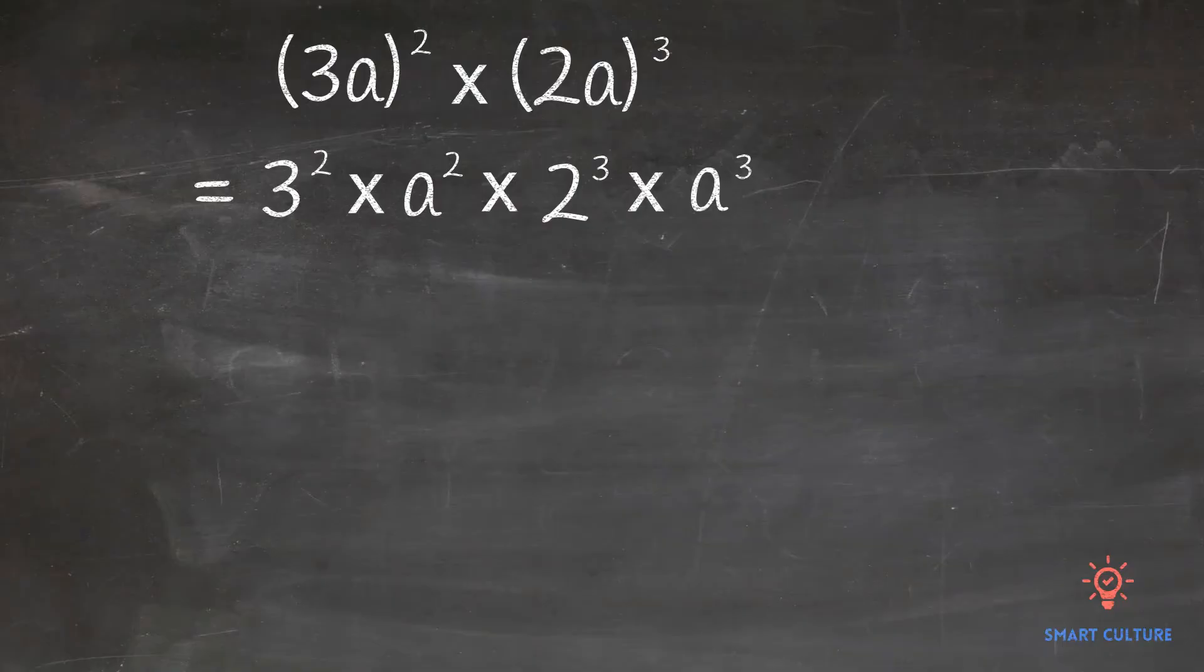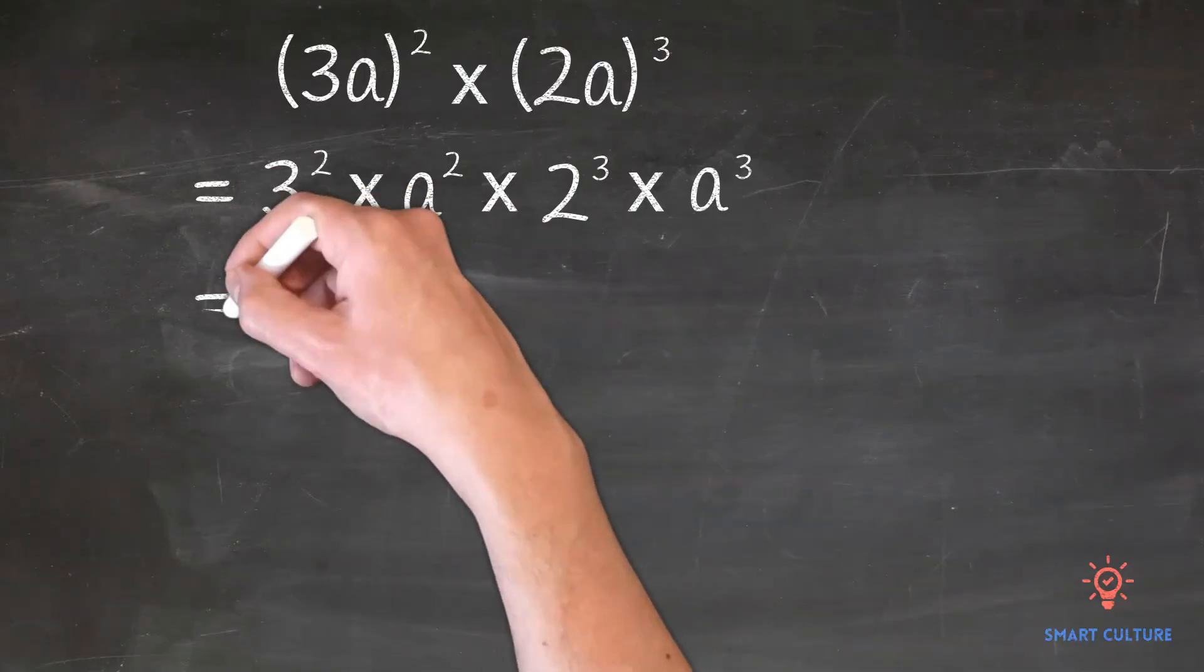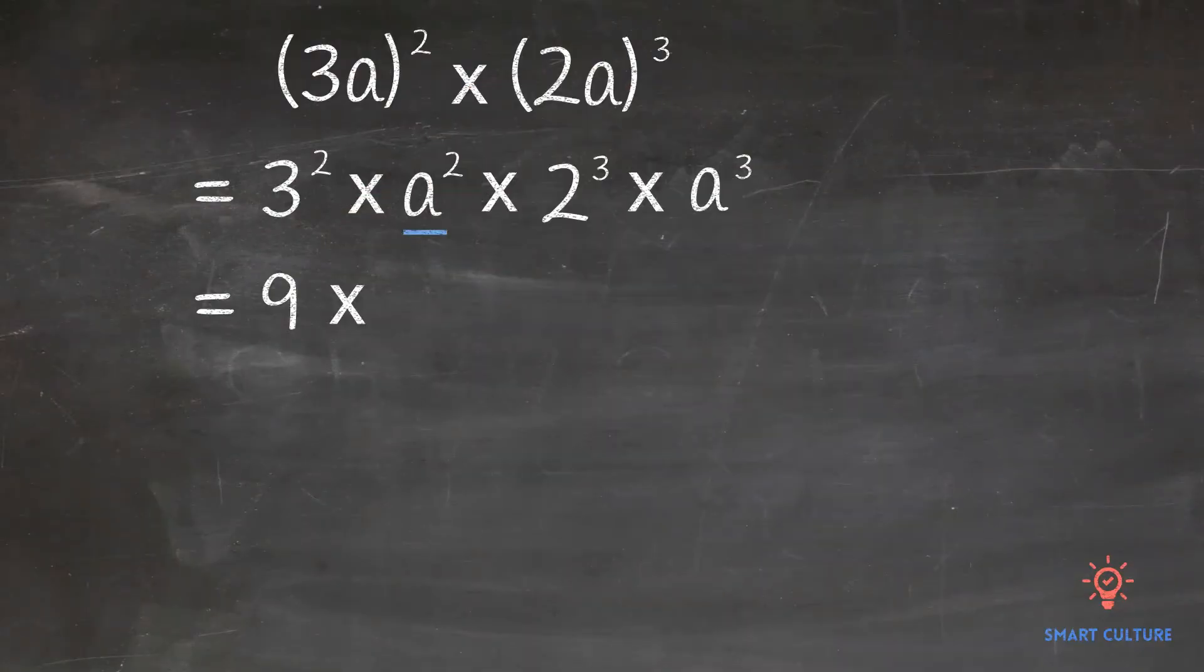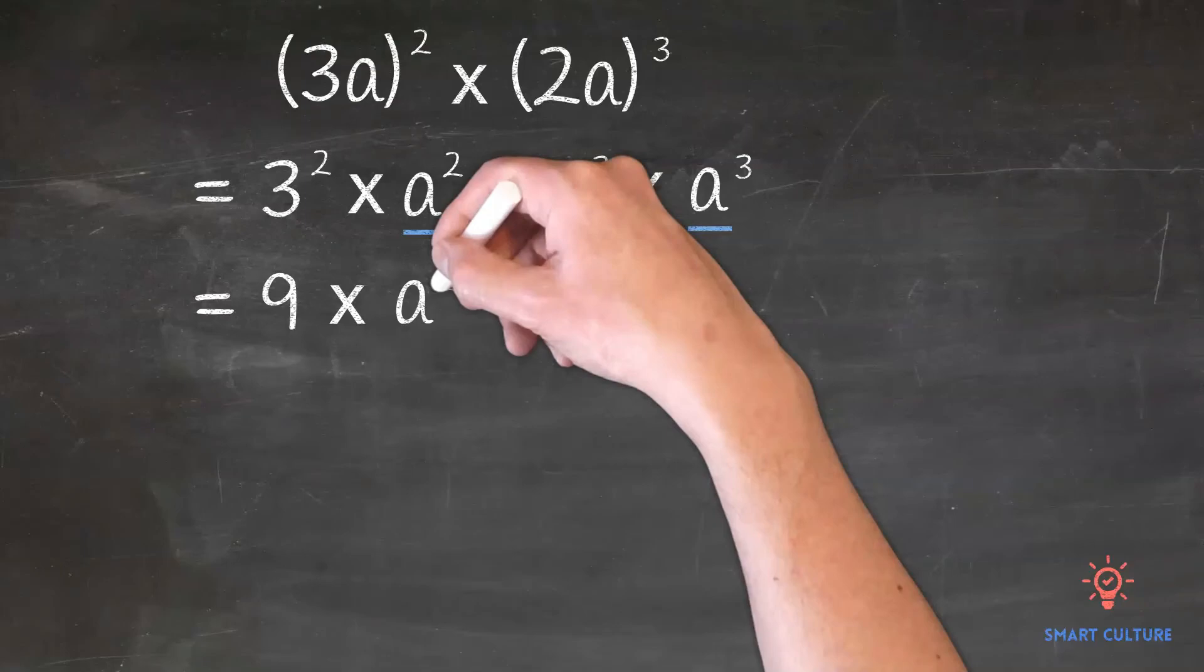Remember, the product of powers of the same base is equal to the same base raised to the sum of the exponents of the powers. 3 squared is equal to 9. A squared times a cubed is equal to a raised to the power of 2 plus 3.